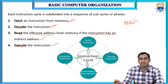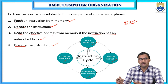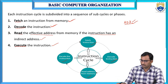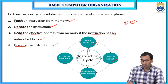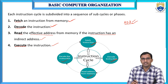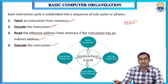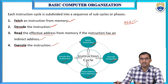These are the different phases of the instruction cycle. The first one is fetch — fetching is retrieving the instruction from memory. The second one is decoding — interpreting the instruction. The third one is reading the effective address from memory. The fourth one is executing the instruction. If any instruction undergoes all these four phases, that will be considered as one complete instruction cycle.